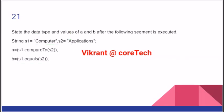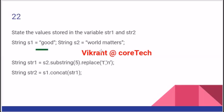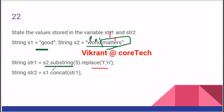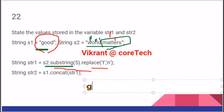We have 'good' and 'word matters'. If I talk about S2.substring(5), from index 5 onwards — counting 0, 1, 2, 3, 4 — so from 5 onwards we have space, so 'space matters'. In 'space matters', what I am supposed to do is replace T with N, so 'matters' will become 'manners'. This will be 'manners', and if I concatenate with 'good', we get 'good' with a space in between and 'manners'.